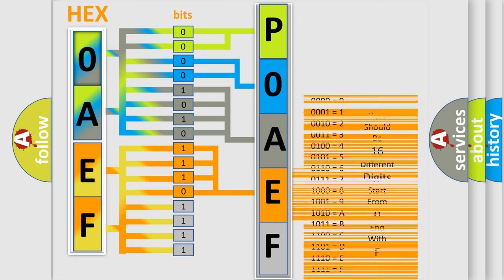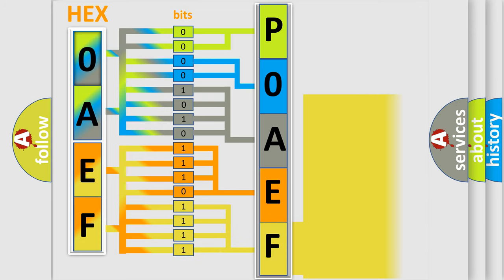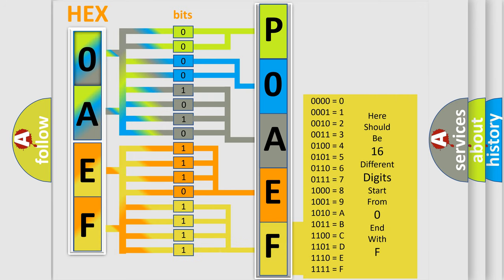A single byte conceals 256 possible combinations. We now know in what way the diagnostic tool translates the received information into a more comprehensible format.